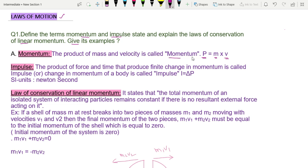Next, impulse. The product of force and time that produces a finite change in momentum is called impulse. When you multiply force and time, you get impulse. The finite change in momentum is P2 minus P1, that is final momentum minus initial momentum. This change is written as delta P.